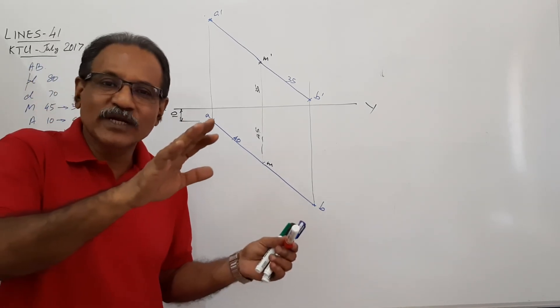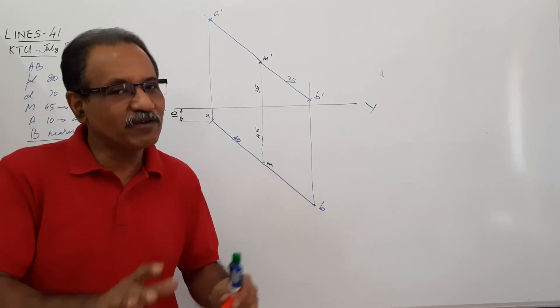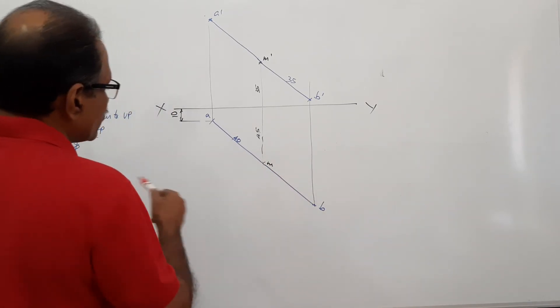Make the plan parallel to xy. Elevation is true length and theta will be there. Make the elevation parallel to xy. Plan will be true length and phi will be there. Or you can go for trapezoidal method.